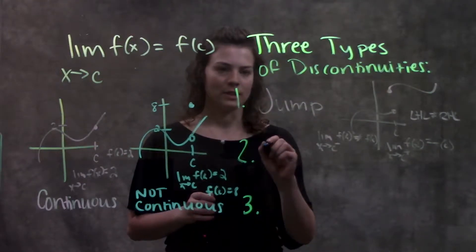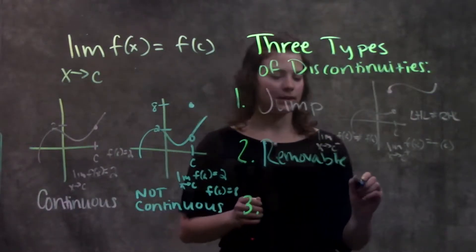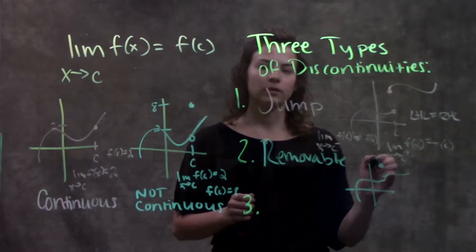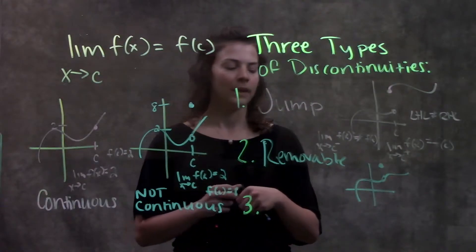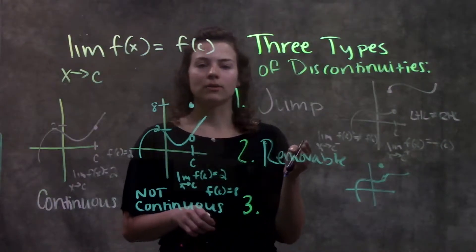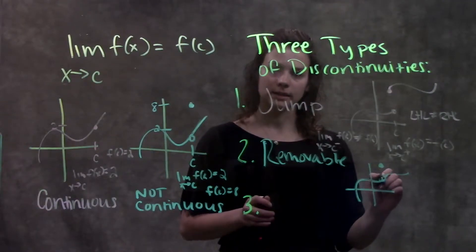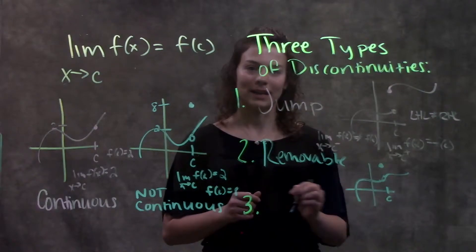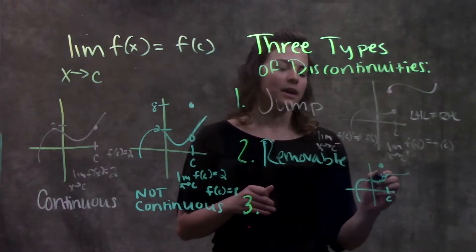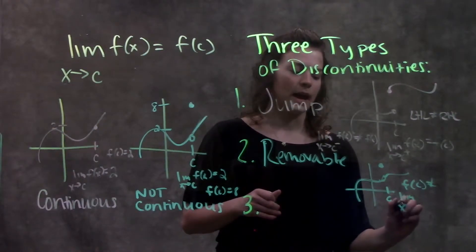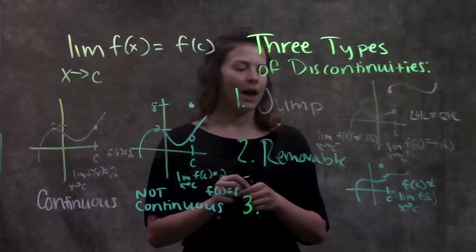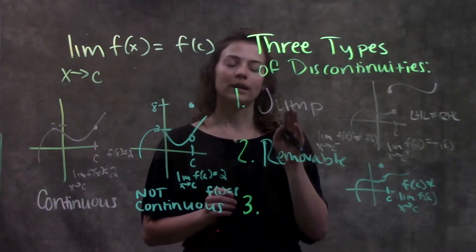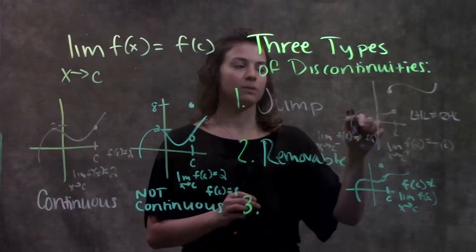The second type of discontinuity is called a removable discontinuity. On a graph, this looks like a function with just a hole in the middle — there could be a point somewhere else, or just a hole with no value defined at that x value. The limit as x approaches c does exist here, but the value f(c) is not equal to that limit — that's where the definition falls through. It's always good to remember: for removable discontinuities the limit exists, whereas for jump discontinuities the limit does not exist.